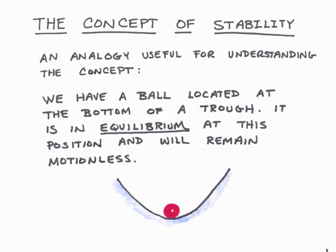In this presentation, we'll use an analogy for understanding the concept of stability better. We have a ball located at the bottom of a trough. It's in equilibrium at this position, and it remains motionless. We're going to look at the behavior of the ball at the bottom when we conduct certain tests — two different kinds of tests. In one test, we'll disturb the initial position of the ball. In the other test, we'll apply a force to the ball to move it. The behavior of the ball under these two different tests corresponds to two different kinds of stability.